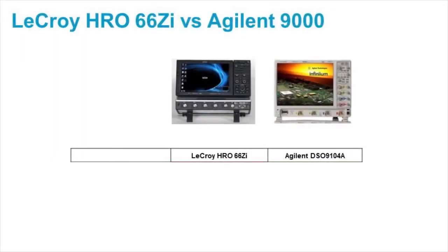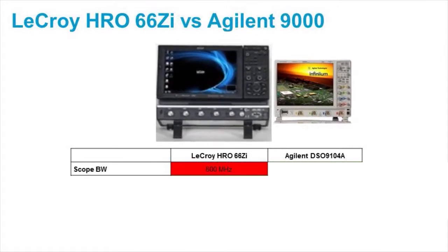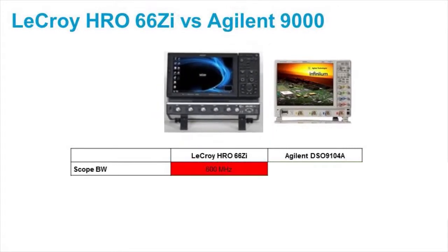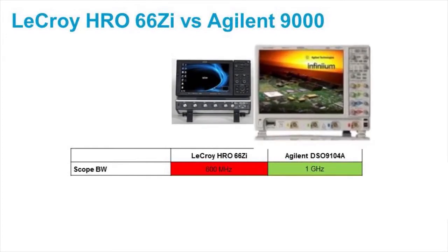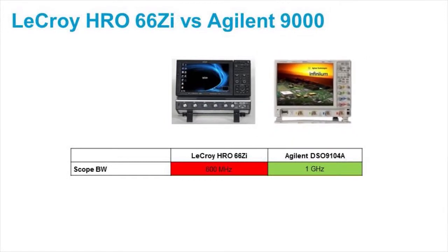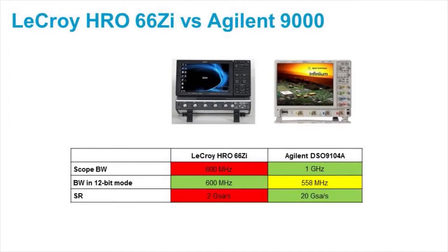What I'd like to do is show you a real world compare using LaCroix's HRO 600 megahertz oscilloscope. It's a scope that has 12 bit ADC, and I'm comparing that to an Agilent 9000 series 1 gigahertz unit that also has a 12 bit mode in high res mode. You'll see from the comparison that in 12 bit mode, both scopes have nearly identical bandwidth, and the Agilent scope, because it can sample 10 times faster, it forms better high res mode without a bandwidth reduction than the LaCroix scope. Also, both scopes are equivalently priced.